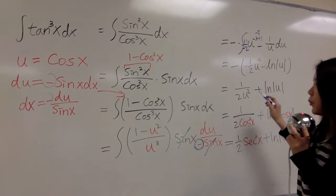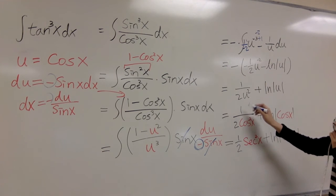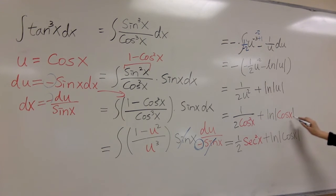And now we put u back to cosine. That's 1 over 2 cosine squared x plus ln cosine x.